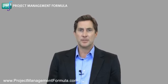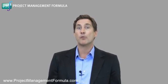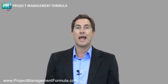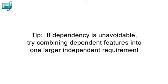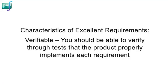For example, suppose a customer selects as high priority a requirement that is dependent on a low priority one. In this case, the low priority feature would have to be developed first before developing the high priority feature. When there is no way to avoid dependencies, you can combine the dependent features into one larger independent requirement, or find another way of splitting them. And the last characteristic of excellent requirements is that they are verifiable. Try devising a few tests or other verification procedures to figure out whether or not the product properly implements each requirement.